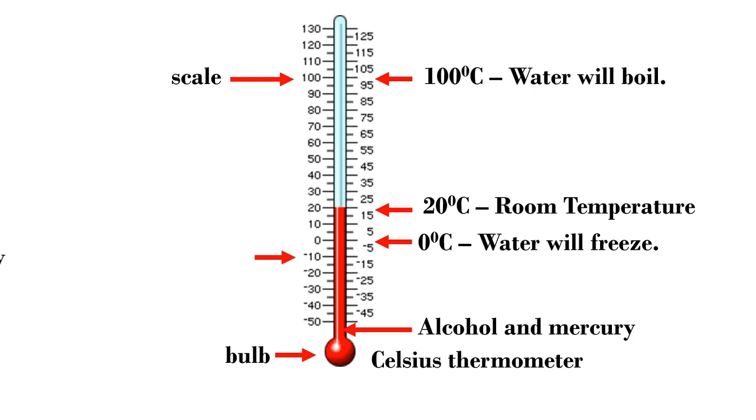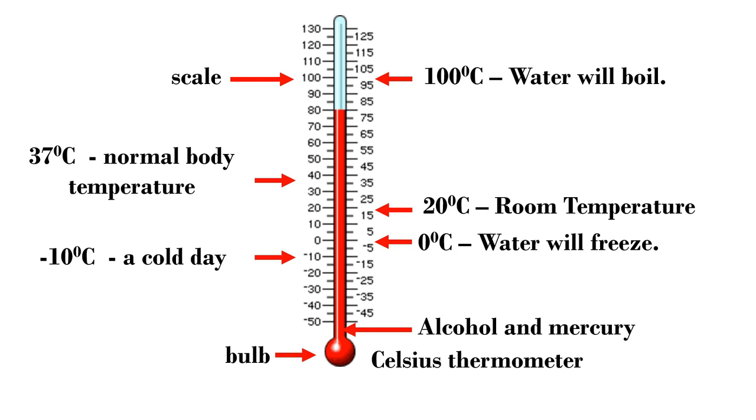Negative 10 degrees Celsius is a cold day. 37 degrees Celsius is normal body temperature. In reading temperature, locate the last line of the red color inside the thermometer. So, in this thermometer, the actual temperature is 20 degrees Celsius.